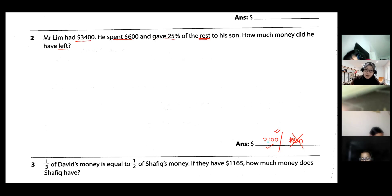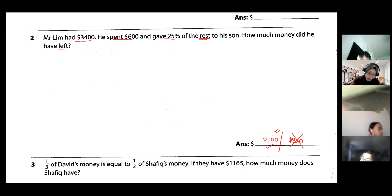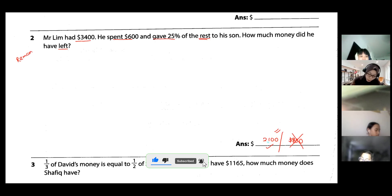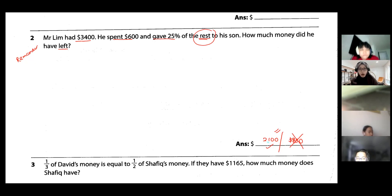There is the word 'rest' and there is the word 'left.' This is definitely the remainder concept. I want to focus on finding the rest first, so that I know how much is given away to the son, and then I can find how much is left over in the end.